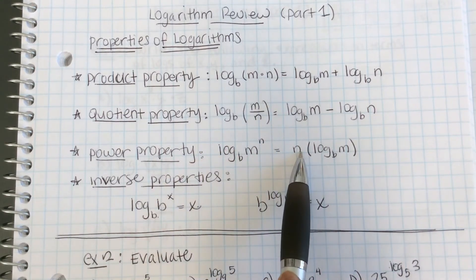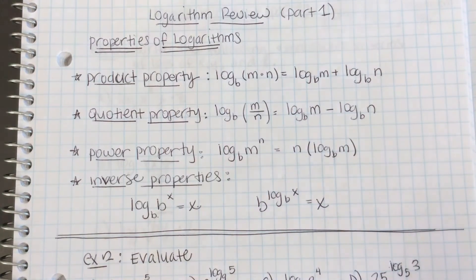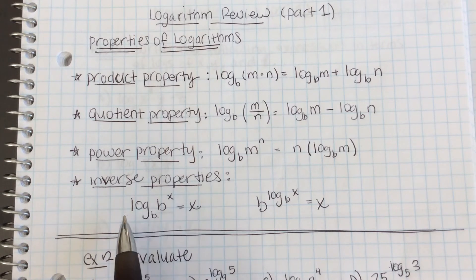Bring your exponent down in front and multiply by your logarithm, which is an exponent. And then inverse properties.